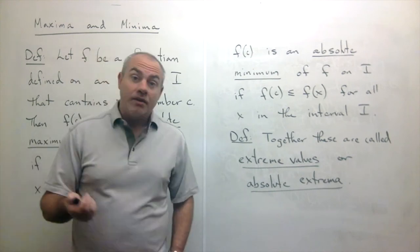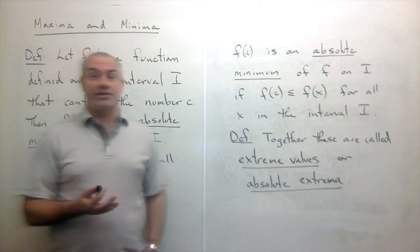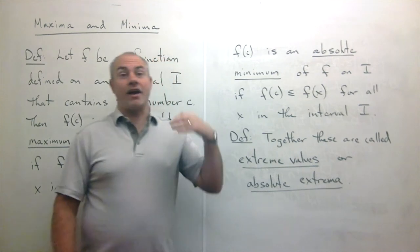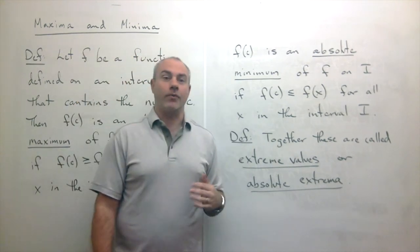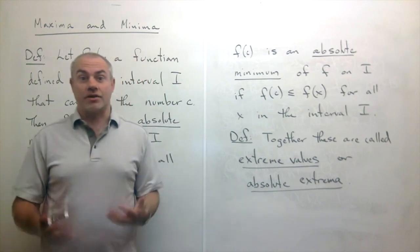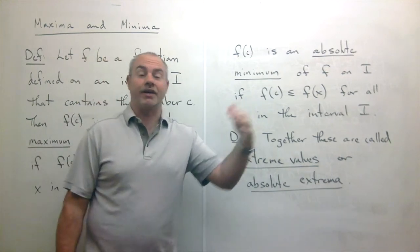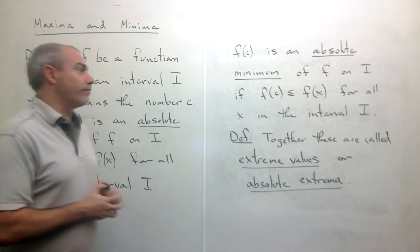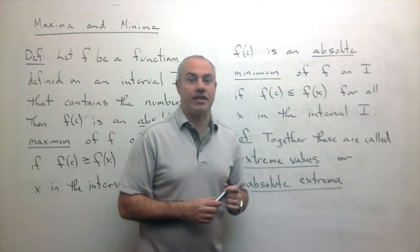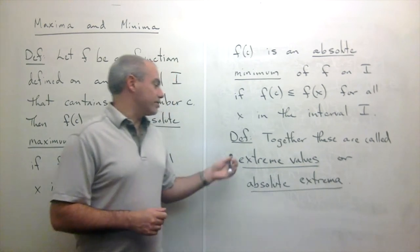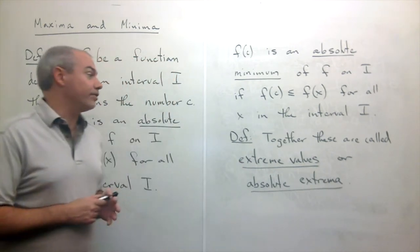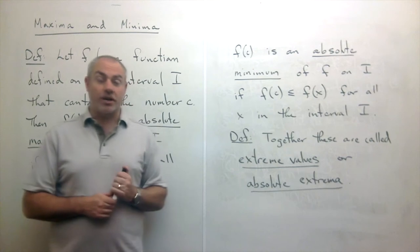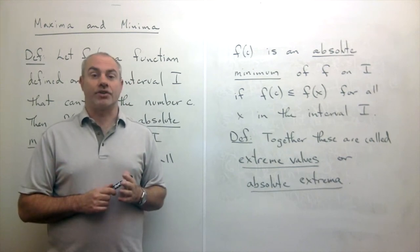It's fairly clear why this would be important to us in calculus. We care about where things are big, where things are small, where our profits are big, where our costs are small, or where our velocity is big. We care about where something is the biggest or smallest it could ever be. Together we call these extreme values of the function, or absolute extrema.